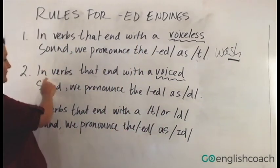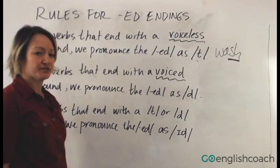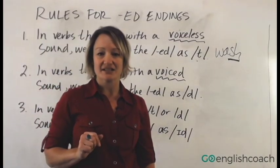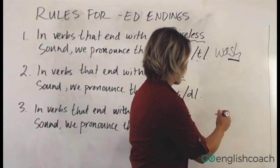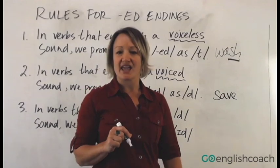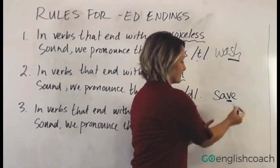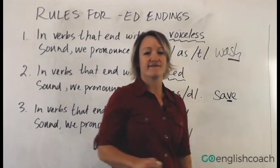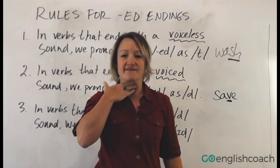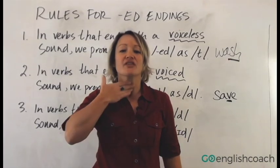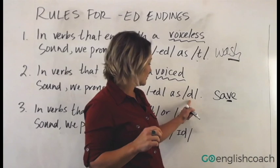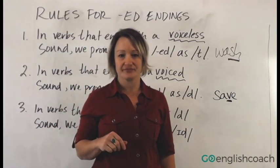Next, in verbs that end with a voiced sound, we pronounce the '-ed' as a 'd.' The example is 'save.' The final sound is the 'v' sound — not the 'e.' If you hold your hand here and make that final 'v' sound, there is vibration, and that means it's a voiced sound. So we use the 'd' sound: 'saved.'